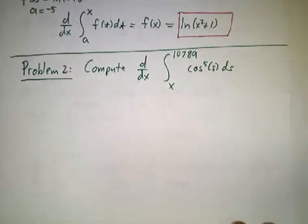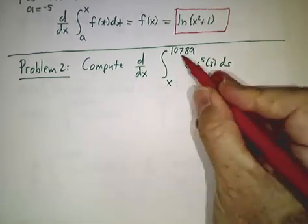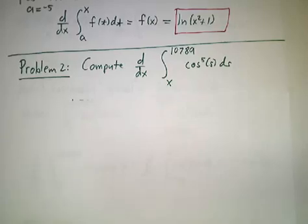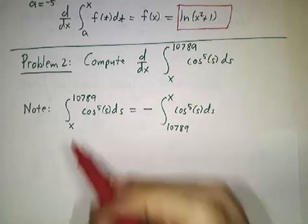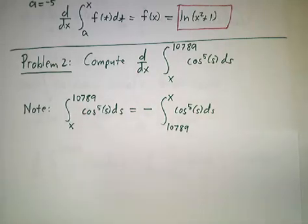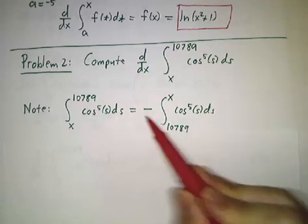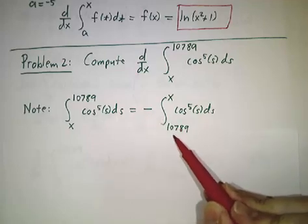Here's one where you want to integrate from x to some other number. Well, when you integrate from x to some other number, you can turn it around. The integral from x to 10,789 is minus the integral from 10,789 to x.